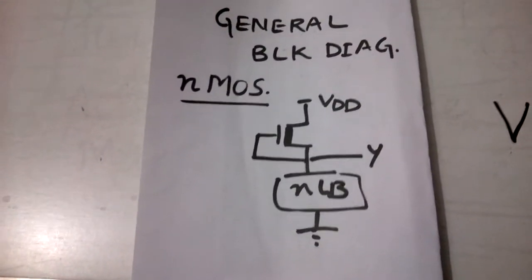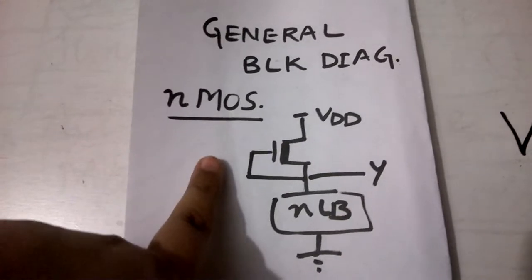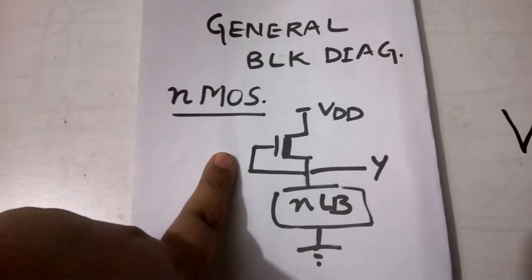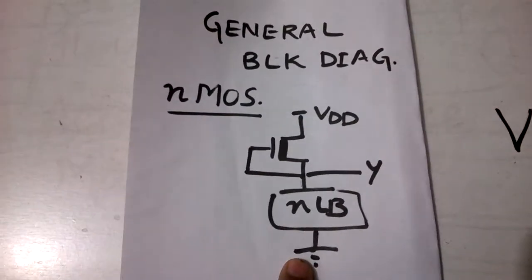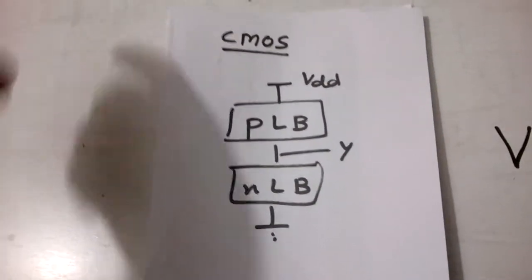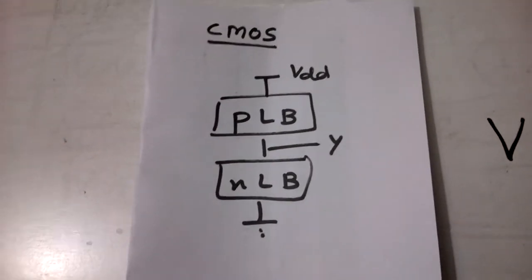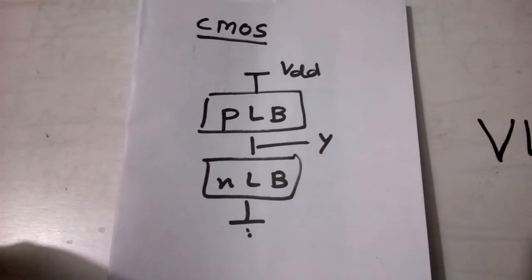This was the basic block diagram for the NMOS structure in which we took the depletion type NMOS and the N logic block. Another one which we did was the CMOS logic structure in that we use the N logic block as well as the P logic block. In this both NMOS and PMOS devices will be used.